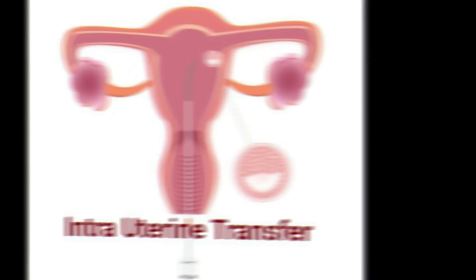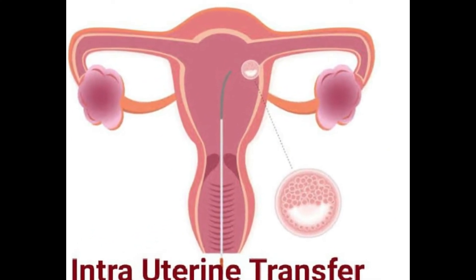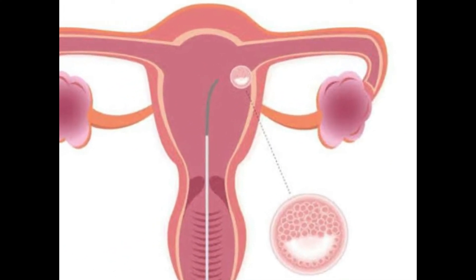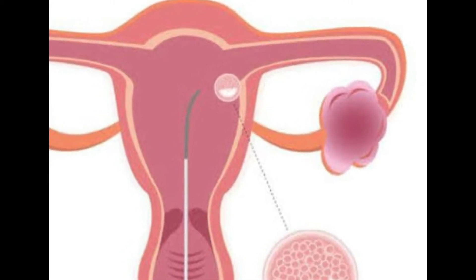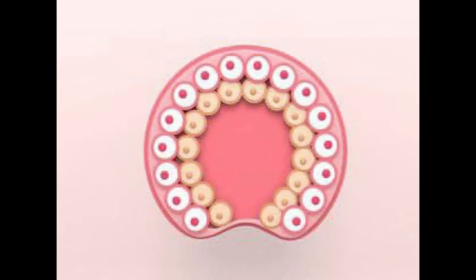The second method is IUT — intrauterine transfer. In this case, we transfer the zygote into the uterus. This is used when the embryo has more than 8 blastomeres, while ZIFT is used for up to 8 blastomeres.